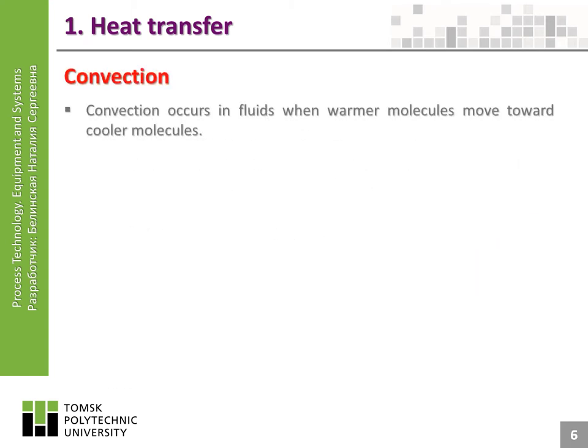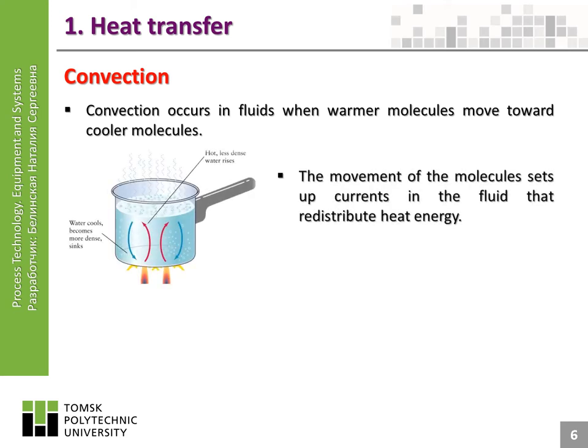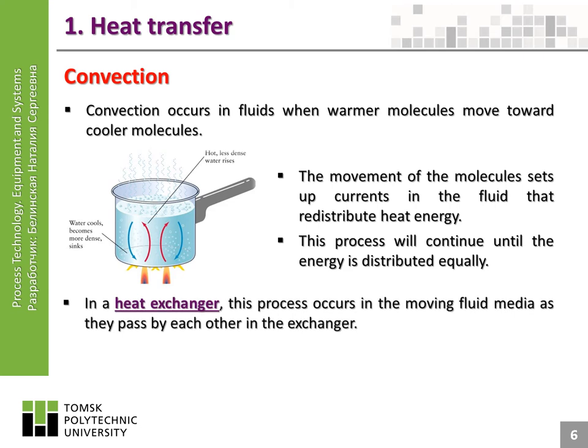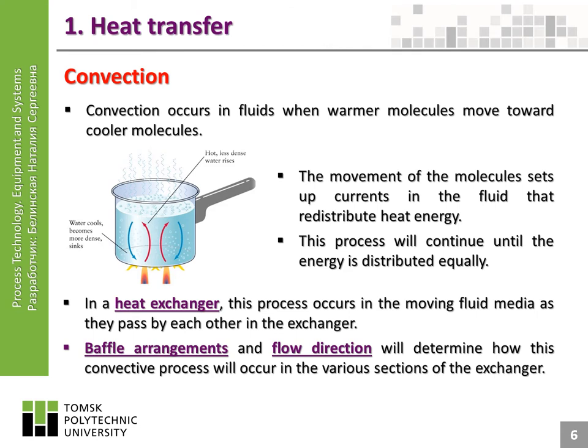Convection occurs in fluids when warmer molecules move toward cooler molecules. The movement of the molecules sets up currents in the fluid that redistribute heat energy. This process will continue until the energy is distributed equally. In a heat exchanger, this process occurs in the moving fluid media as they pass by each other in the exchanger. Baffle arrangements and flow direction will determine how this convective process will occur in the various sections of the exchanger.